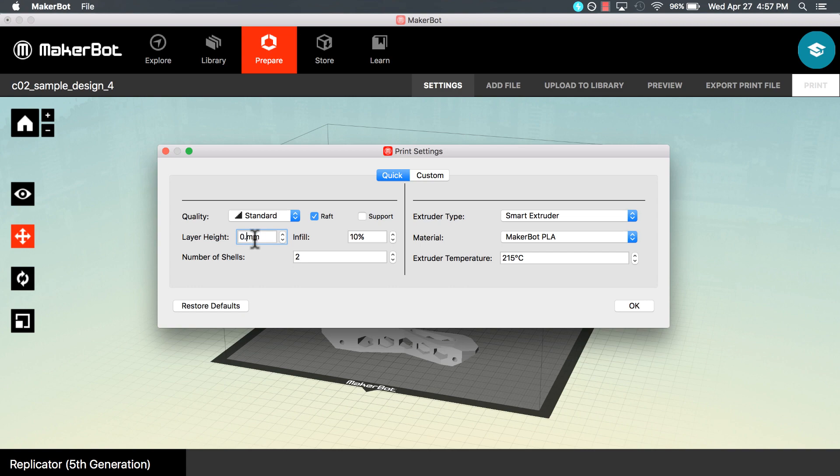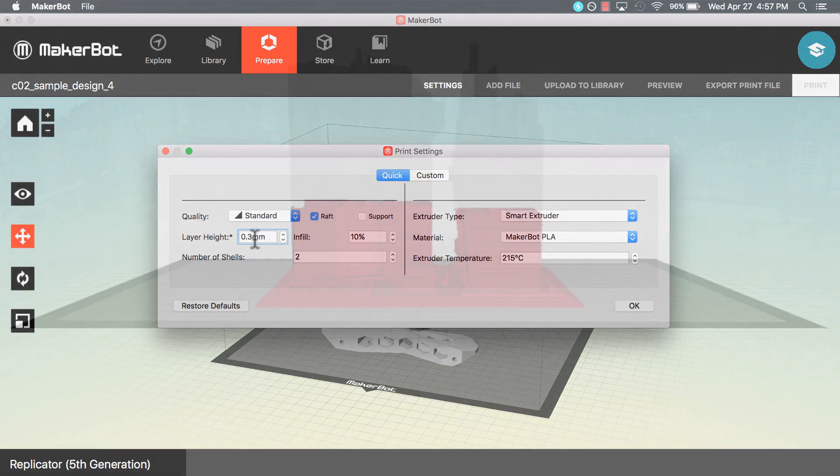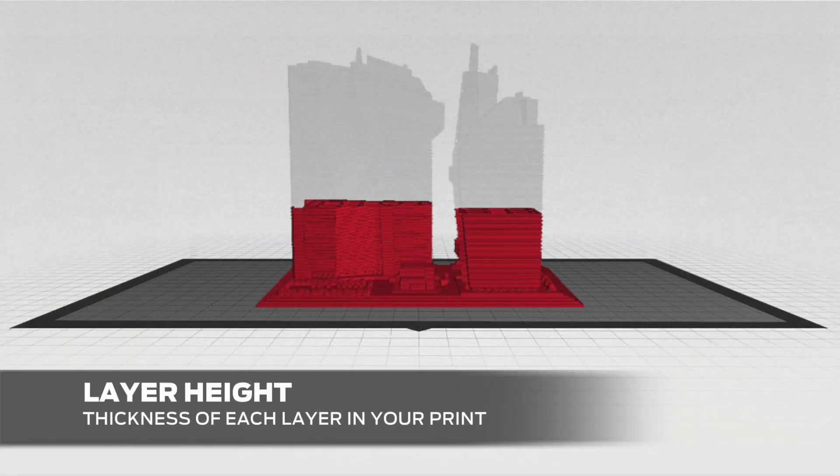Layer Height refers to the thickness of each layer in your print. The most commonly used layer height is 0.2mm, which is about the thickness of two pieces of paper.